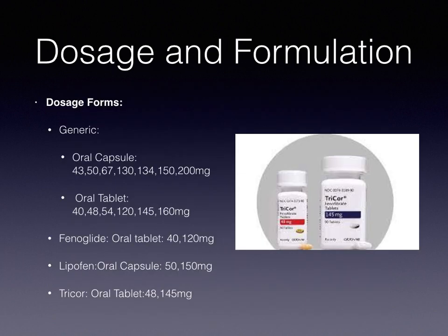Dosage and Formulation: Phenofibrate generic comes in an oral capsule dose ranging from 43 mg to 200 mg, and oral tablet ranging from 40 mg to 160 mg. Fenoglide comes in an oral tablet with two dosages of 40 mg and 120 mg. Lipofen comes in an oral capsule with dosages of 50 mg and 150 mg. Tricor comes in an oral tablet with dosages of 48 mg and 145 mg.